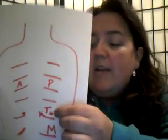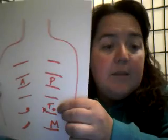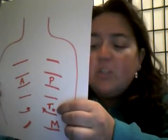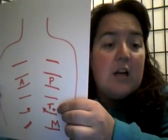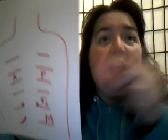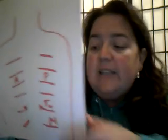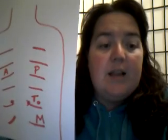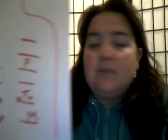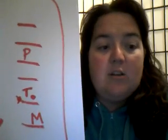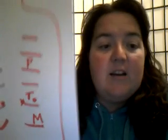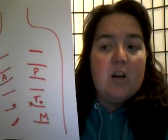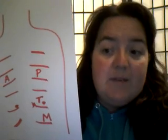Then you go down to your T, which is the fourth intercostal space. It's directly down. A lot of times it's right along the nipple line there. I kind of did a circle with the next one there — that is your tricuspid valve.